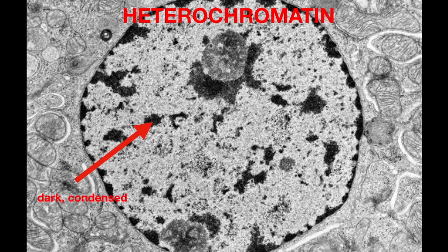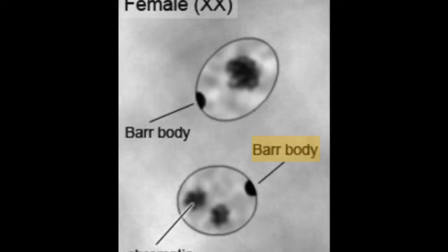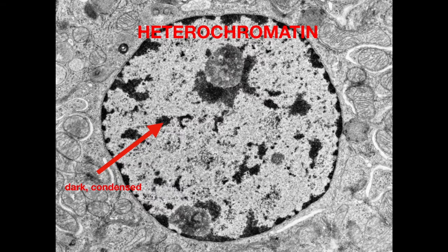There are two types of chromatin: heterochromatin and euchromatin. Heterochromatin is highly methylated and not very acetylated, making it very condensed and thus appearing dark under electron microscopy. Because of its highly condensed structure, heterochromatin is not transcriptionally active. Barr bodies are regions of X inactivation and also appear in this region of the chromatin, and may be visible on the periphery of the nucleus.